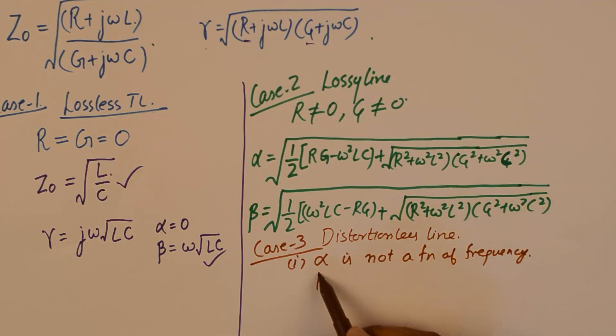Please understand, distortion will be absent from the transmission line if: number one, α is not a function of frequency, and number two, β is a linear function of ω. If α is not a function of frequency, then all frequencies get attenuated by the same amount and we can say that frequency distortion is absent. We would want our transmission line to behave similarly or equally well to all the frequencies that we transmit over it.